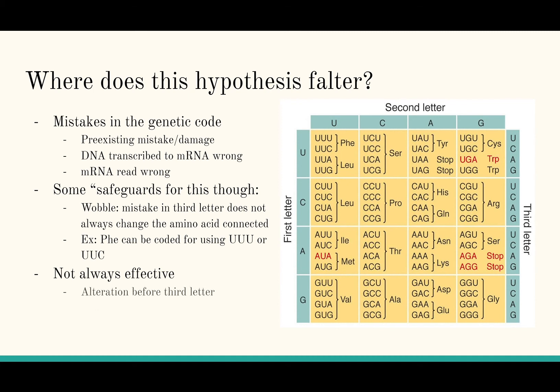Unfortunately, if the alteration exists in the first two letters, it will code for a different amino acid. Additionally, if the codon whose third letter is changed is a start or stop codon, it can have an even greater impact. The alteration of a start codon can cause entire strands of mRNA to go un-translated, because there is no start signal, meaning the resulting protein will not be made. A stop codon that is changed into a regular amino acid will result in a much longer protein than desired. Both of these can have drastic effects on the body.